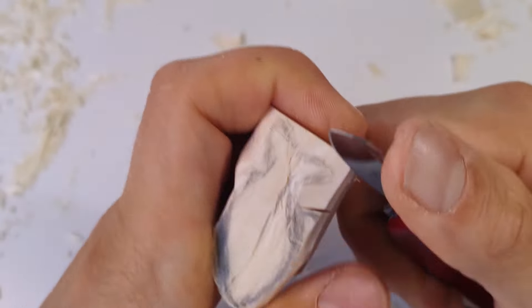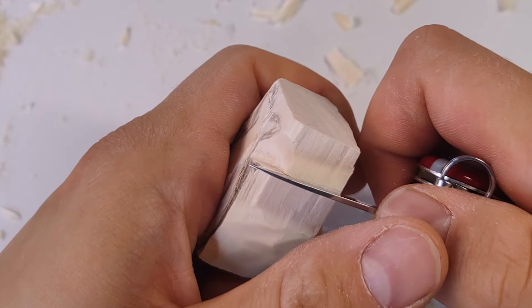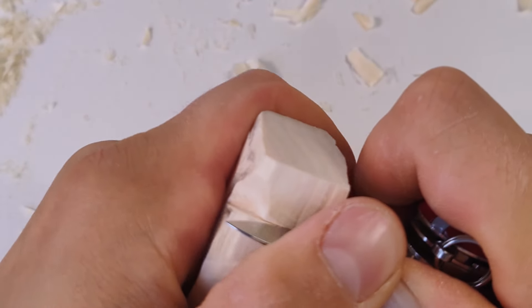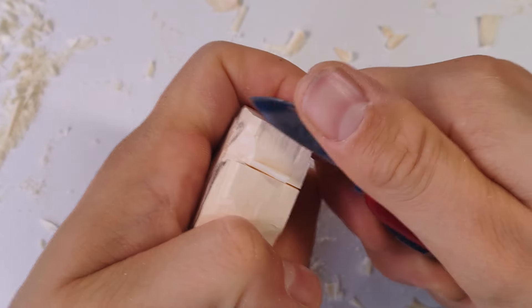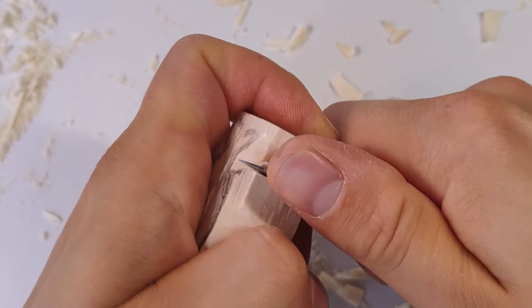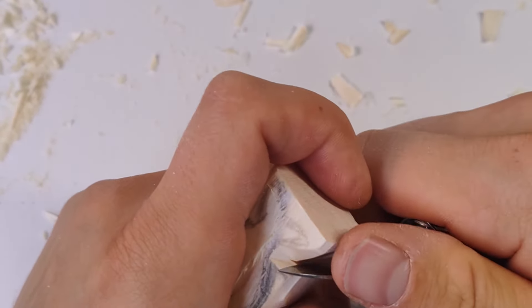In even tighter inside corners stop cuts are useful. Pressing the blade into the wood like this creates a tiny gap that stops the blade when making cuts like these. When getting deeper you'll probably have to redo the first cut of the stop cut a few times.